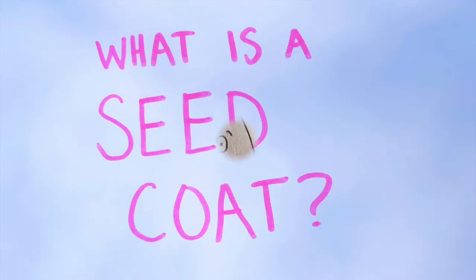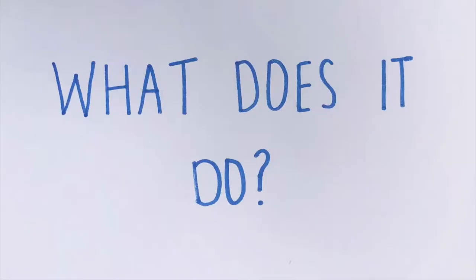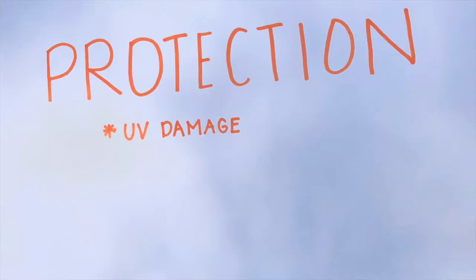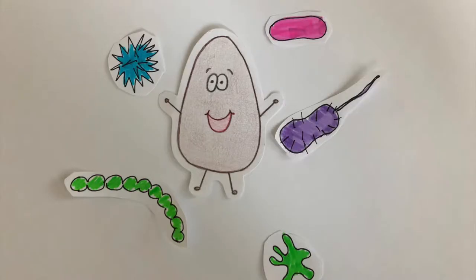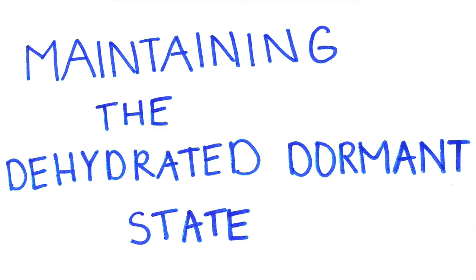What is a seed coat? It's not just this fabulous coat I have on — it's a protective outer covering of the seed. The seed coat has an important role in protection. It protects a young embryo from the sun's harmful UV rays, pathogens, and mechanical damage. It also has a role in maintaining the dehydrated, dormant state of the seed, which prevents premature germination. All of these characteristics allow the seed to travel long distances and grow into a beautiful plant.